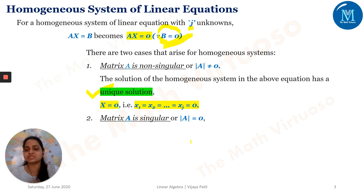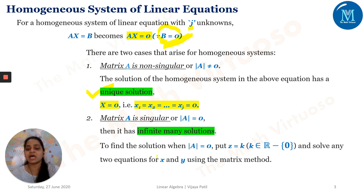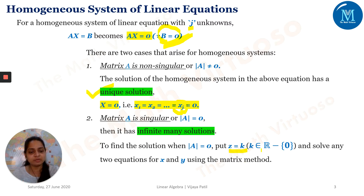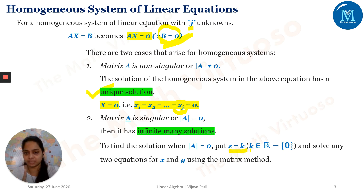What will happen if the matrix is singular? That means determinant of A equals zero — then it has infinitely many solutions. To find those infinitely many solutions, out of J variables, we have to assume one variable. For example, Z equals K, where K belongs to ℝ minus {0}. That means I cannot assume that variable to be zero.